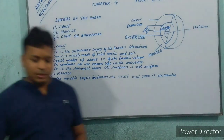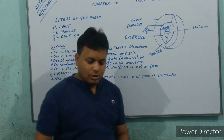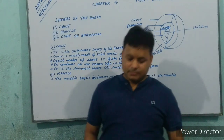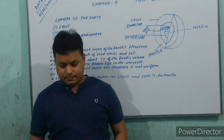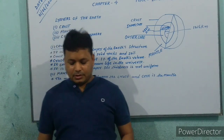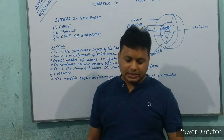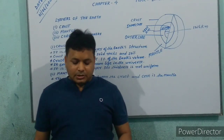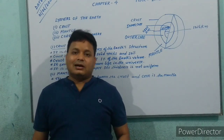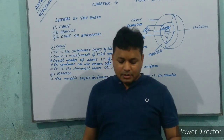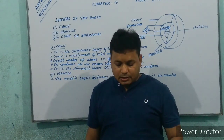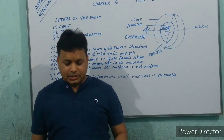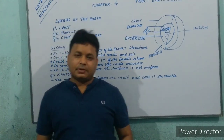Continental crust is made of silica, magnesium and aluminium. The layer that has more silica and aluminium is also known as SIAL. It is however non-existent under the ocean, especially the Pacific.